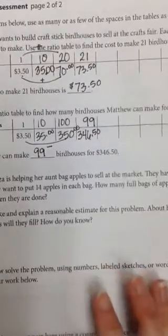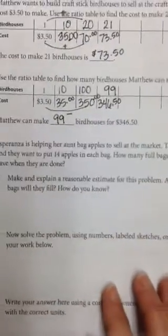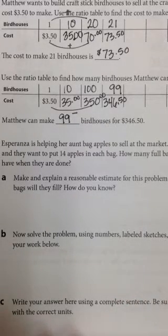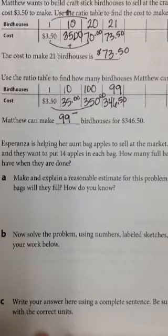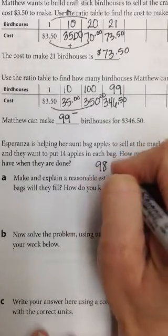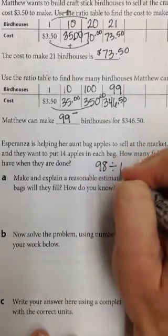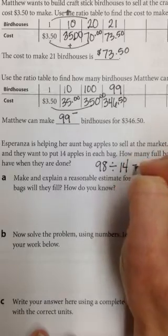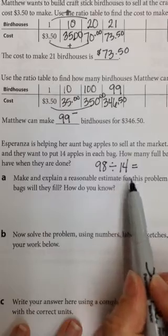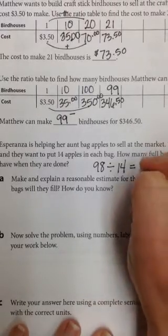Okay, on the next one, the next one talks about Esperanza. Esperanza is helping her aunt bag apples to sell at the market. They have 98 apples, and they want to put 14 apples in each bag. So how many full bags of apples will they have when they are done? So that equation would be 98 divided by 14 equals what?